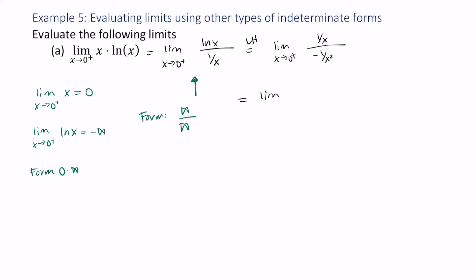As the limit of x squared over x as x approaches 0 from the right, which becomes the limit as x approaches 0 from the right of negative x, which is just 0.